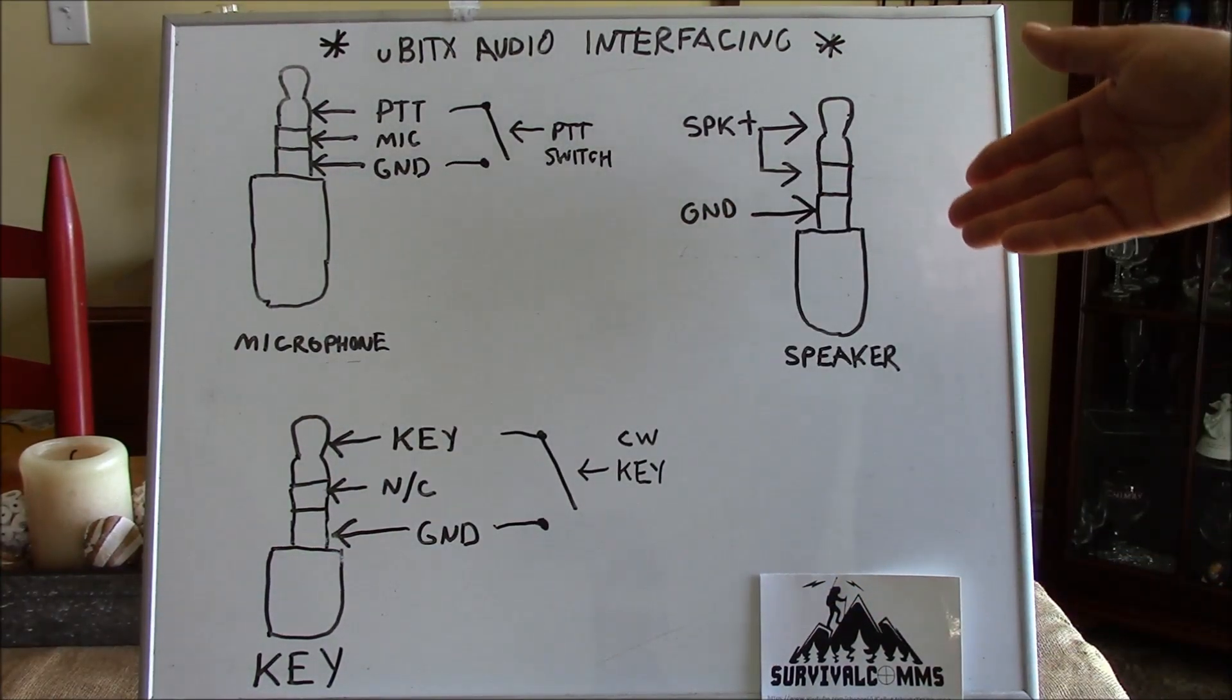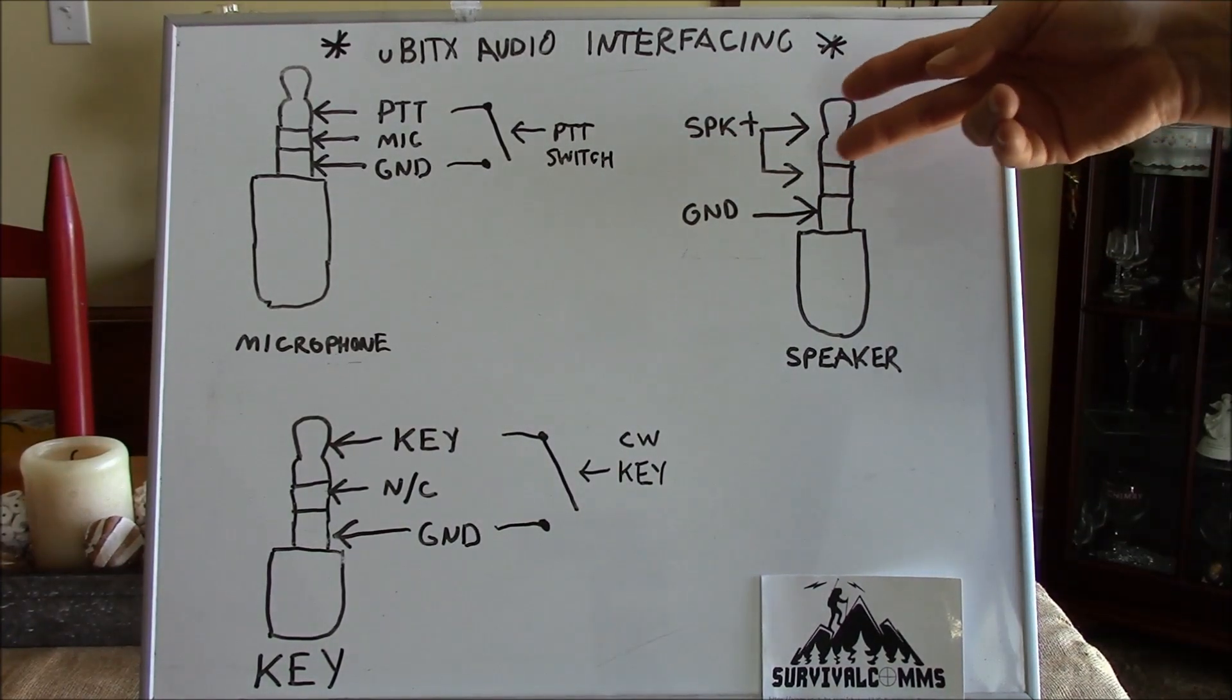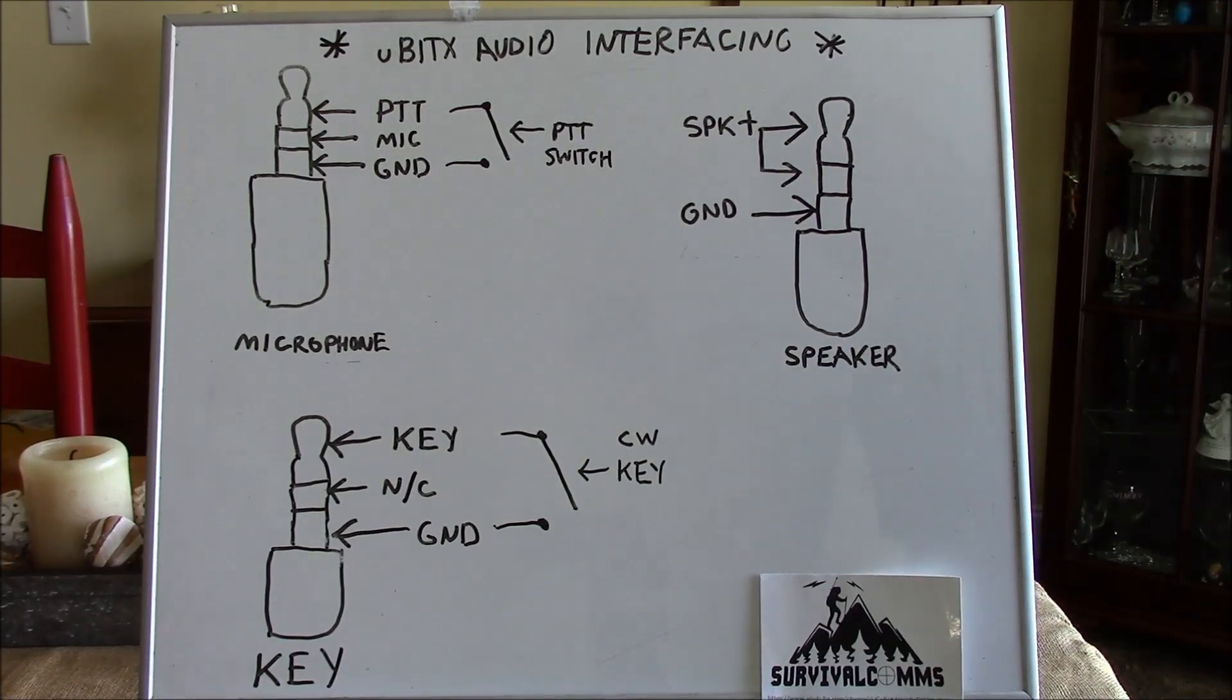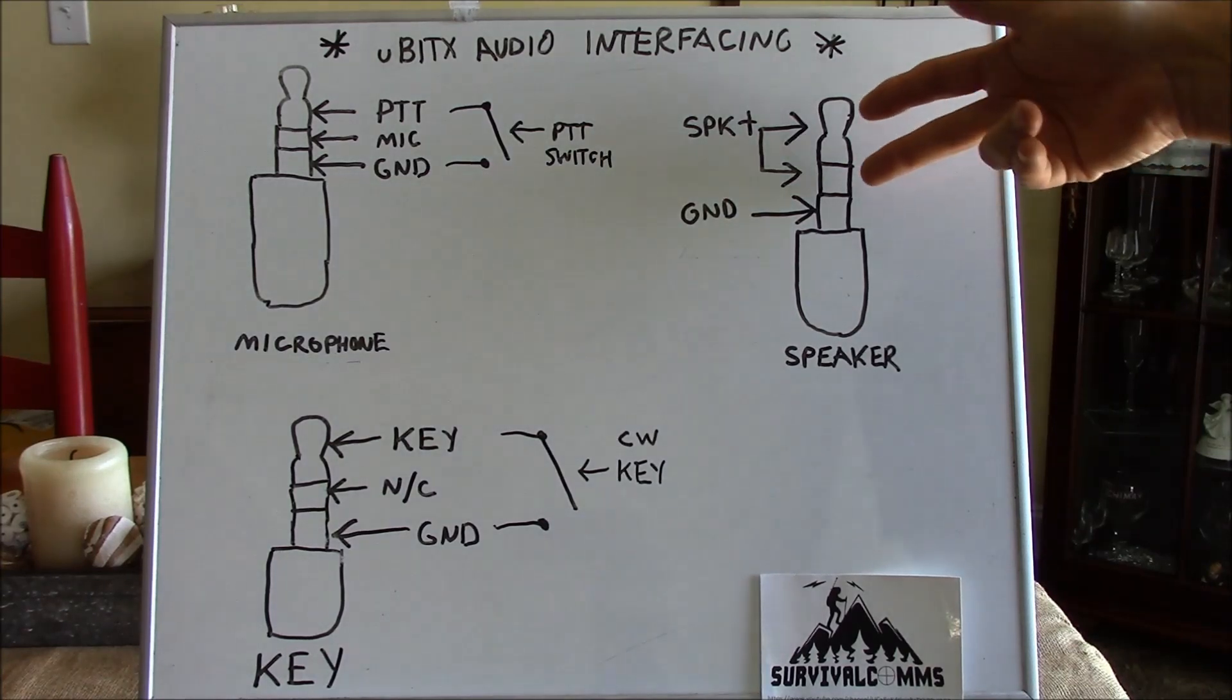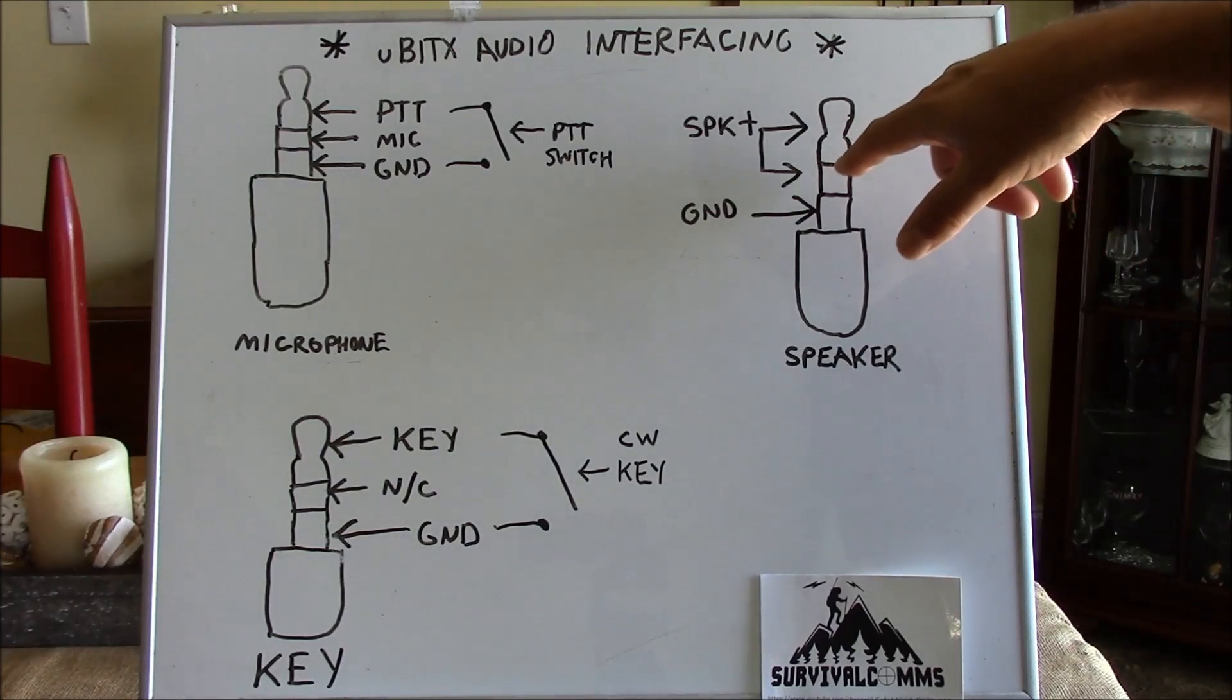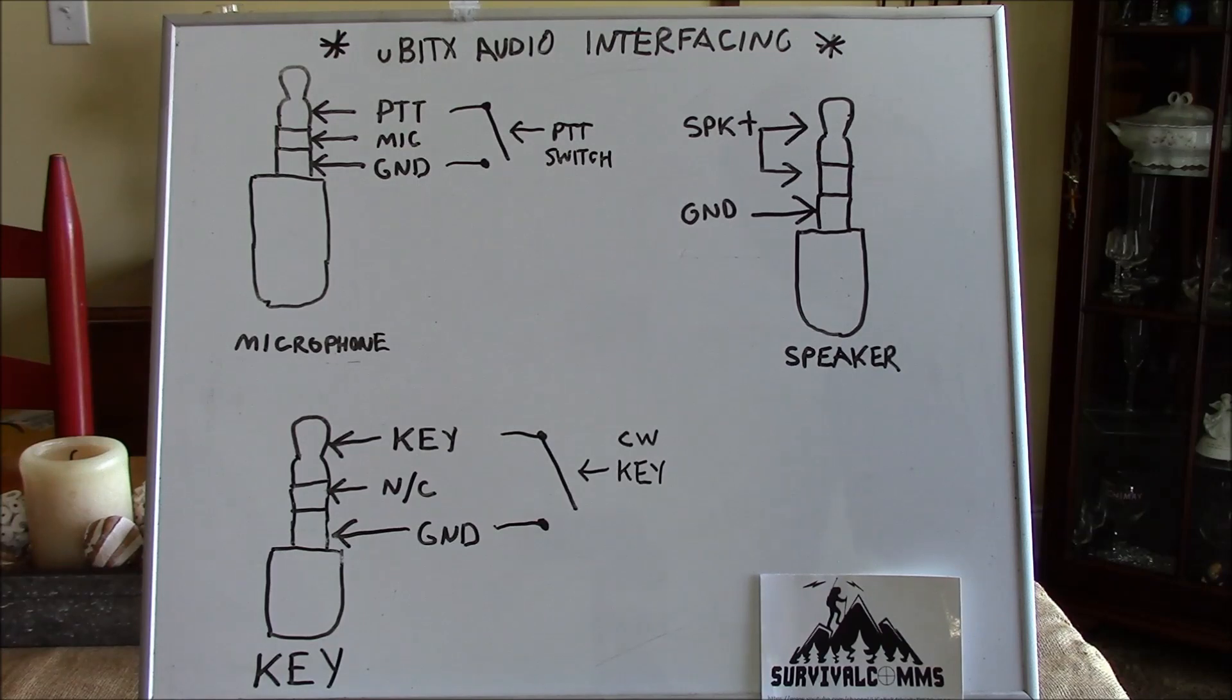Now getting to our output here which is our speaker, we can see that our tip and our ring both are tied together and the reason why you do that is if you're using a set of headphones or something to where you have two speakers, this right here is going to pass audio to both of those speakers. Whereas if you did not tie those together, only the side that was tied to the tip would have any kind of audio and then of course our sleeve is grounded.